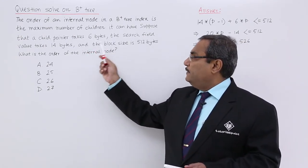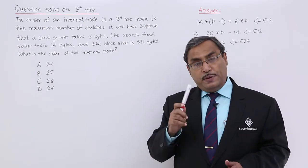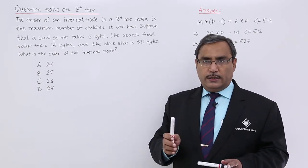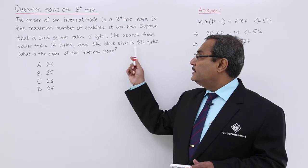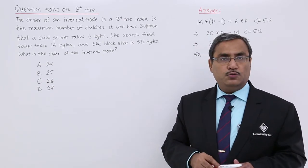6 into p and search field value takes 14 bytes. So p minus 1 into 14, the sum must be less than equal to 512 bytes.